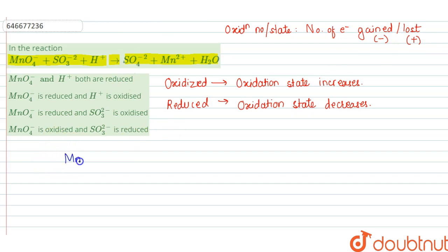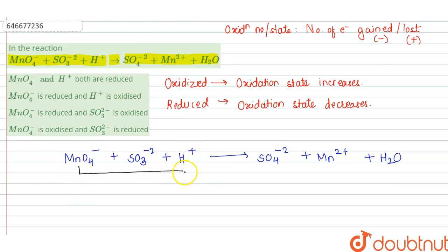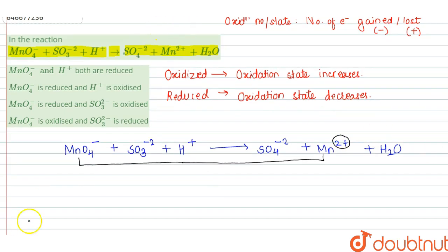The reaction is: MnO4⁻ + SO3²⁻ + H⁺ → SO4²⁻ + Mn²⁺ + H2O. Here, if we see carefully, MnO4⁻ is converting to Mn²⁺. So here the oxidation state of Mn is +2.